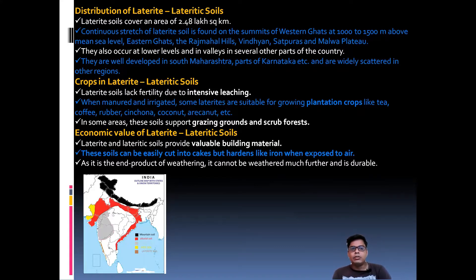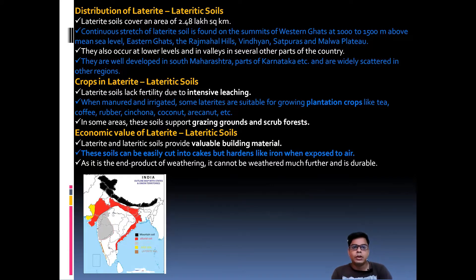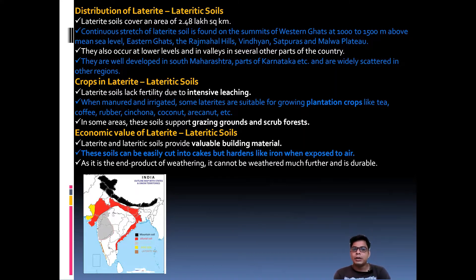Laterite soils cover 2.48 lakh square kilometers in India. They are found at the summits of the Western Ghats at 1,000 to 1,500 meters above mean sea level, and in the Eastern Ghats — including Rajmahal Hills, Chotanagpur Plateau, Vindhya, Satpura, and Malwa Plateau — where rainfall is very high, more than 200 centimeters, with a very dry summer season.